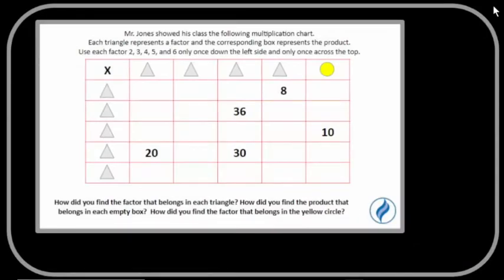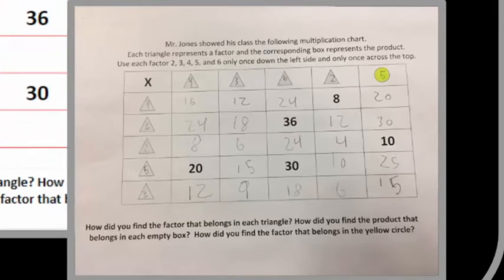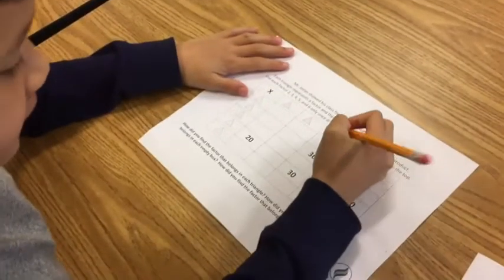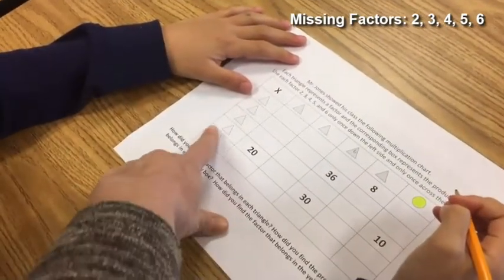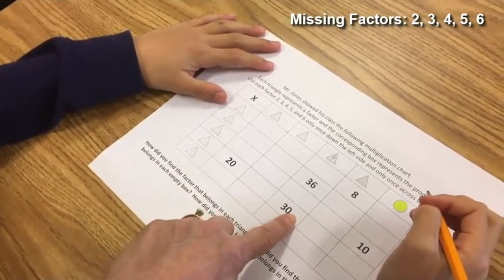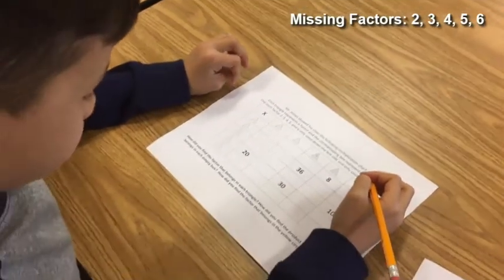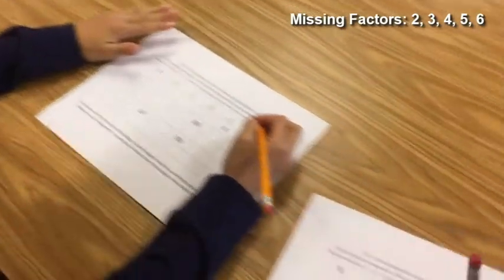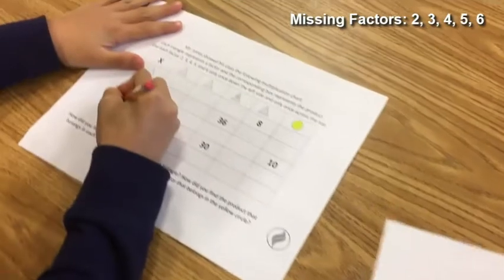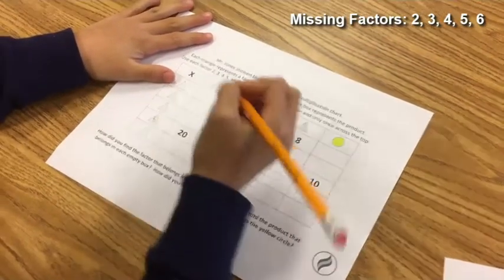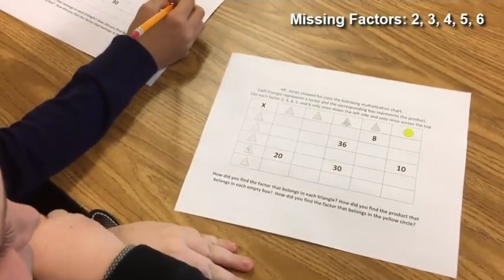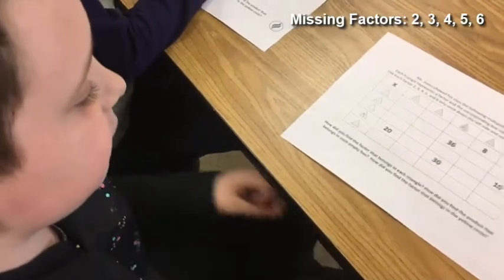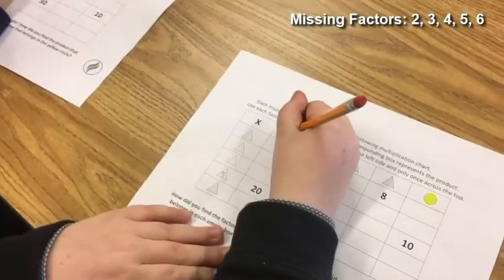For additional rigor, activities such as this multiplication chart puzzle can be implemented. Students use logical thinking as they discover the missing factors and products. I know that 6 is a factor of 36, so I can put a 6 in this triangle up here. Okay, if you know that's a 6, what would that be? 6 times what equals 30? Wait, 6? 5. So I can put a 5 here. Okay, now is there anything else that you can solve using the clues that you have? I know that 5 times 4 is 20, so I can put a 4 right here.